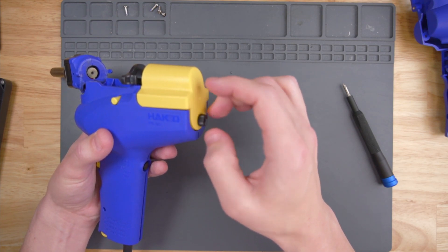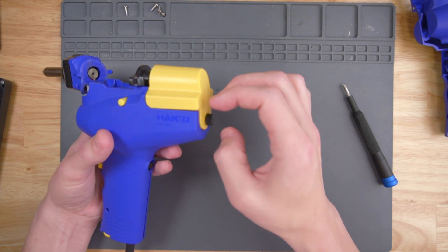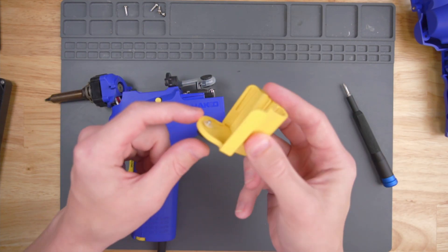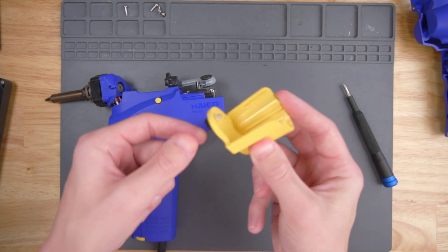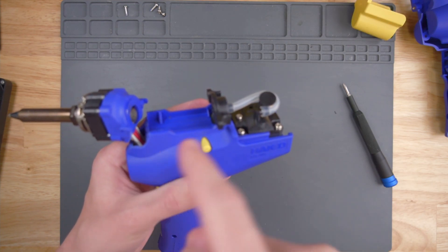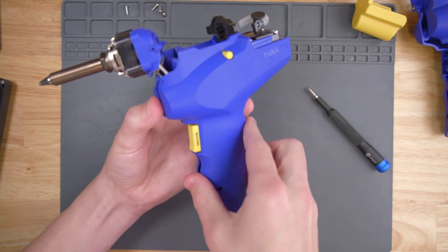It looks like this little thumb screw is captive - it has a little washer that prevents you from taking it out. That's pretty neat. It looks like that's the little pump and the hose that actually provides the suction for the desoldering gun. Maybe now we can take it apart?